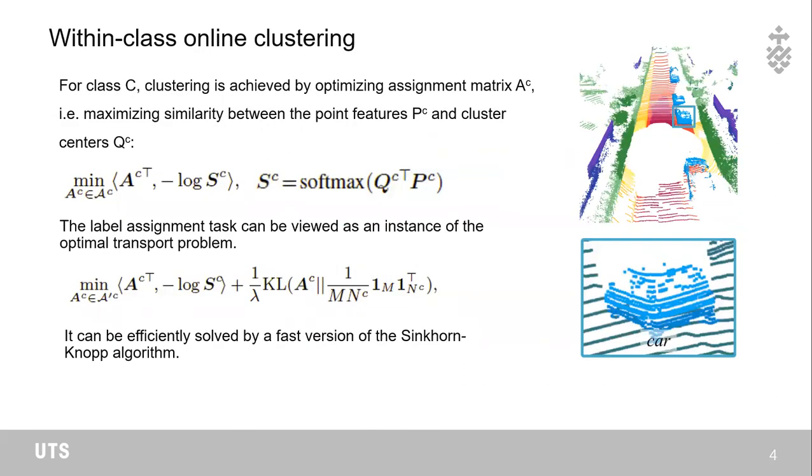Clustering is achieved by optimizing the label assignment matrix. This matrix indicates the correspondence between points and their subclasses. The label assignment task can be viewed as an instance of the optimal transport problem, which can be efficiently solved with the Sinkhorn algorithm. It is highly efficient on GPU. In practice, it takes only 60 milliseconds to assign 50,000 points into 40 clusters.